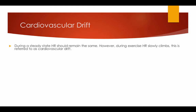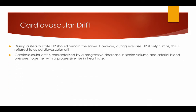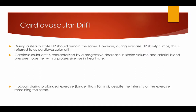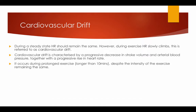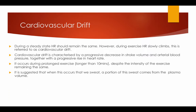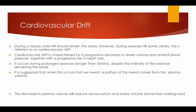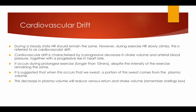Cardiovascular drift: during a steady state, heart rate should remain the same; however, during exercise, heart rate slowly climbs — this is referred to as cardiovascular drift. Cardiovascular drift is characterised by a progressive decrease in stroke volume and arterial blood pressure, together with a progressive rise in heart rate. It occurs during prolonged exercise despite the intensity of the exercise remaining the same. It is suggested that when this occurs, a portion of the sweat comes from the plasma volume.